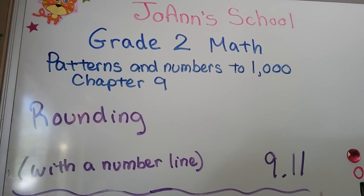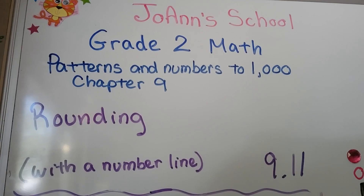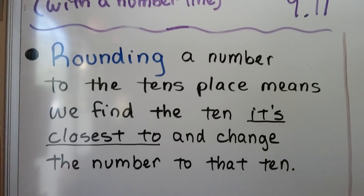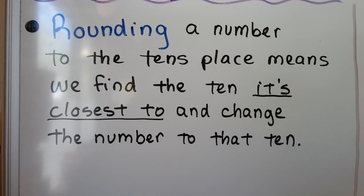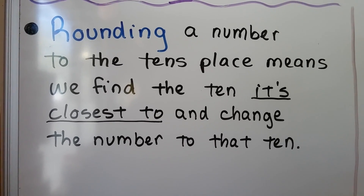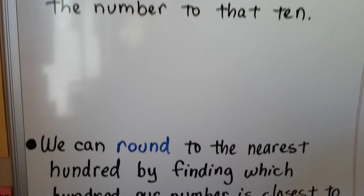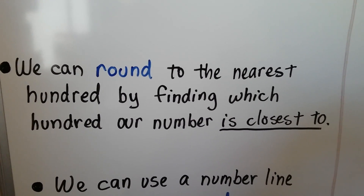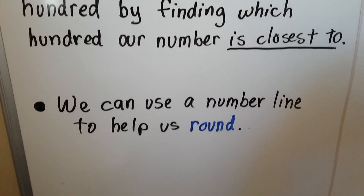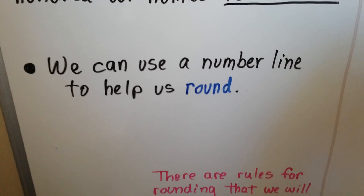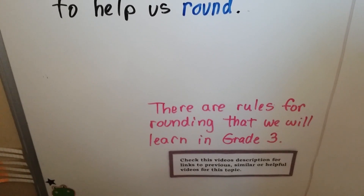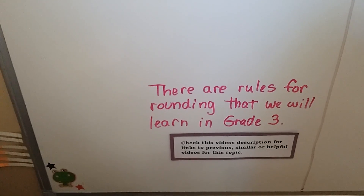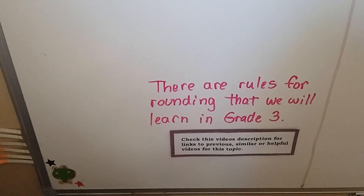We're going to talk about rounding and we're going to use a number line. This is lesson 9.11. Rounding a number to the tens place means we find the 10 it's closest to and change the number to that 10. We can round to the nearest hundred by finding which hundred our number is closest to. We can use a number line to help us round. There are actual rules for rounding that we're going to learn in 3rd grade, but this is only 2nd grade so we're just using a number line for right now.